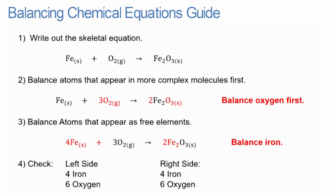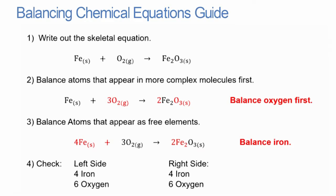In the reaction of iron with oxygen, balance the oxygen first before balancing iron. The number of iron atoms on each side of the equation is 4 and the number of oxygen atoms on each side of the equation is 6.